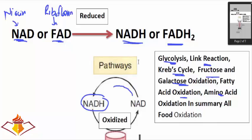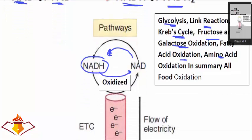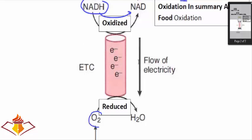This NADH has to be oxidized back to NAD. Since oxidation is loss of electrons, NADH will lose electrons and those electrons will be gained by oxygen, which is then reduced to water. This oxidation of NADH and FADH₂ happens in the electron transport chain, and in that process we get ATP — this is the ultimate source of energy production in the cell.